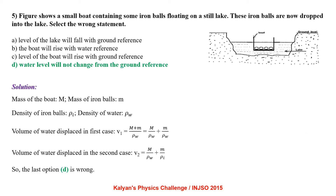A small boat containing some iron balls floats on a still lake. The iron balls are now dropped into the lake. Let the mass of the boat be M and mass of iron balls be m, density of iron rho I, density of water rho W. Volume of water displaced initially V1 equals (M plus m) by rho W. Volume displaced after dropping, V2 equals M by rho W plus m by rho I. Since rho I is greater than rho W, V2 is less than V1, so the water level falls. Option D is the wrong statement.